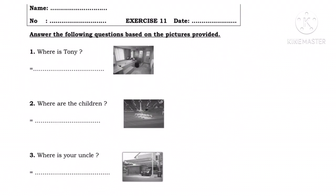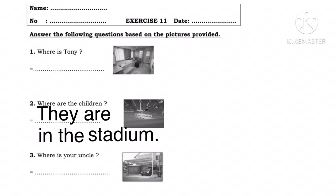Number two. Where are the children? Di mana anak-anak tersebut? They are in the stadium — mereka ada di dalam stadion. The children itu lebih dari satu orang, sama dengan kata mereka, jadi kita ganti dengan subjek they. To be untuk subjek they adalah are, so they are in the stadium.